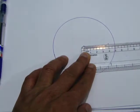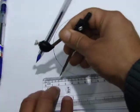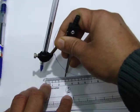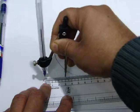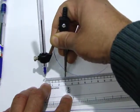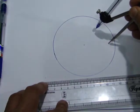Now we will draw a circle of radius 3 cm. Let us set the radius as 3 cm. Now this is 3 cm. Let us draw the circle.